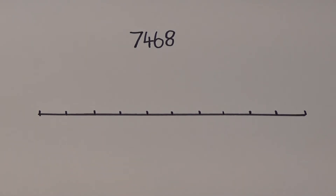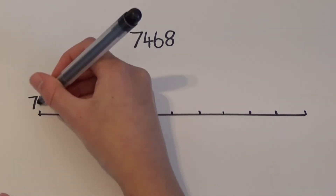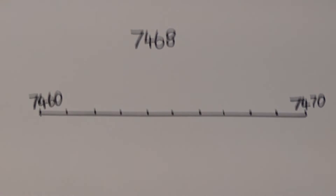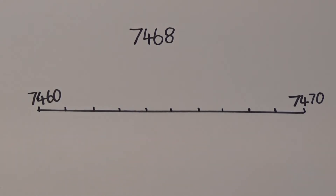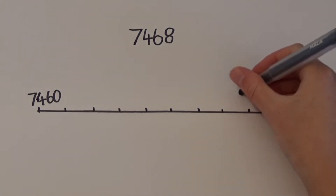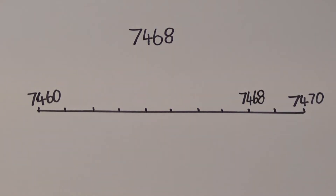It falls between sixty and seventy, so I'm going to write seven thousand four hundred and sixty at one end, and seven thousand four hundred and seventy at the other. I then need to position seven thousand four hundred and sixty-eight — that goes here, so I need to write it in. We can see straight away that sixty-eight is closer to seventy than it is to sixty, so seven thousand four hundred and sixty-eight must round up to seven thousand four hundred and seventy.